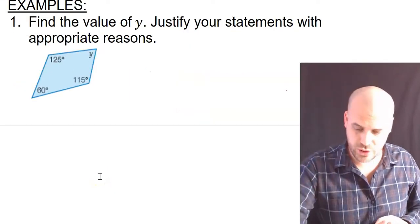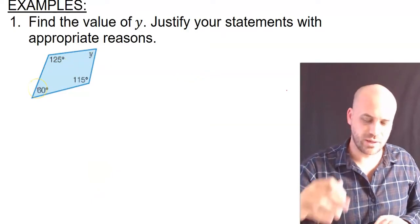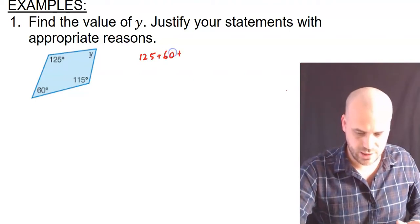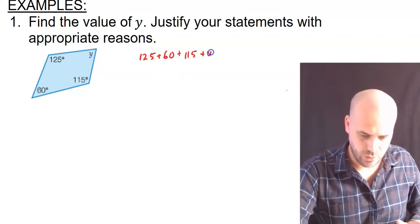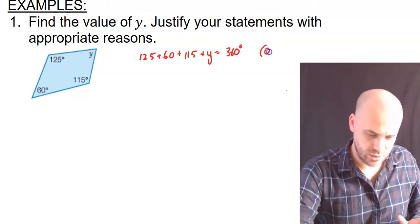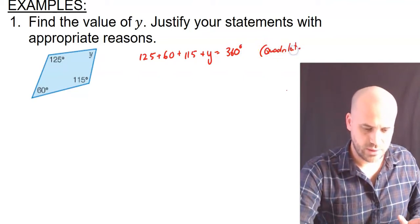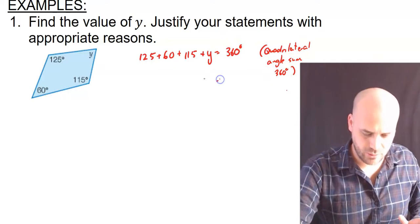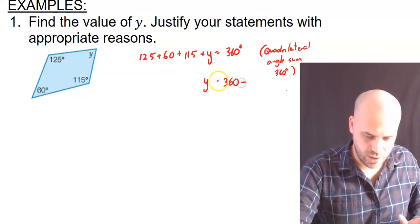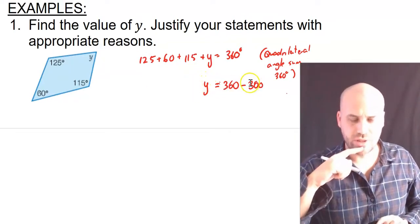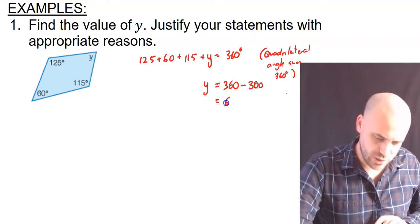A close cousin to that question is this question. The internal angles of a quadrilateral add up to 360. So I can say here that 125 plus 60 plus 115 plus y equal 360 degrees. And the reason for that is quadrilateral angle sum 360 degrees. And from that, we can say that y is equal to 360 minus whatever the sum of that is. I cheated. Got my calculator out. It's not cheating. y equals 360 minus 300, which is, of course, 60 degrees.